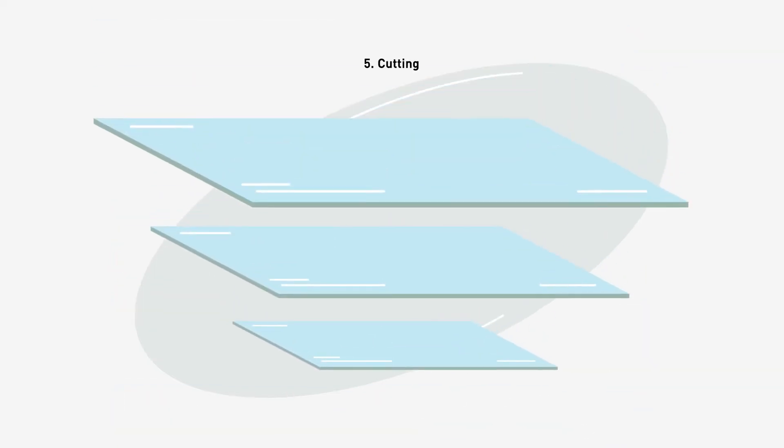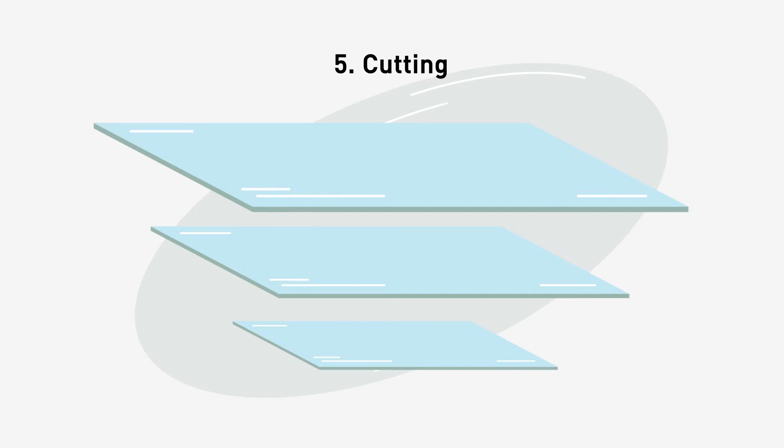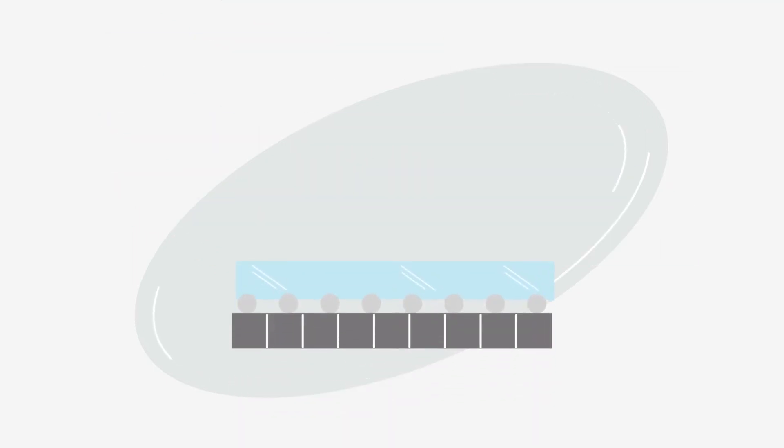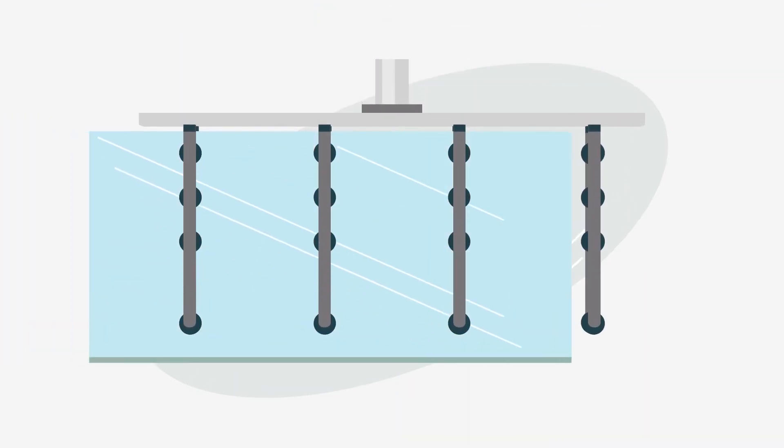After strict quality controls the glass strip is finally cut into different length glass sheets. A computer controlled cutting machine scores the glass with a hard metal wheel. Finally it is automatically broken off and stacked.